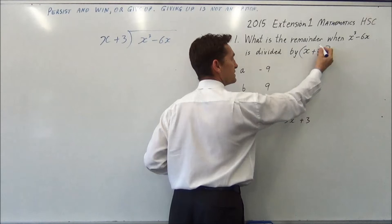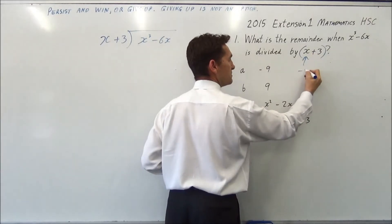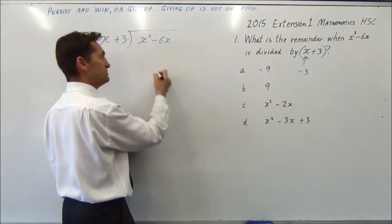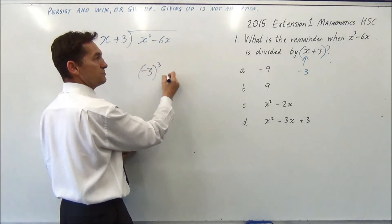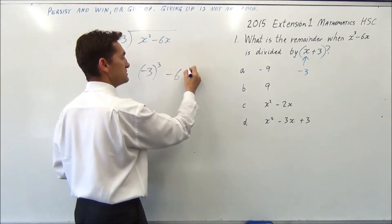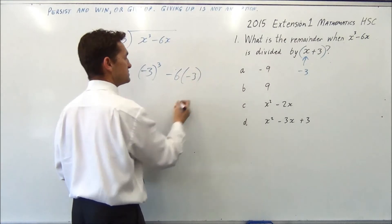so you're putting this in as a factor, this is going to be minus 3. So I'm going to put minus 3 into it, so I'm going to get minus 3 cubed minus 6 times minus 3.